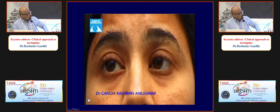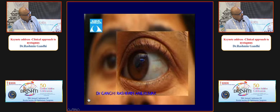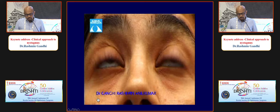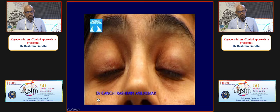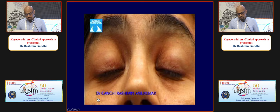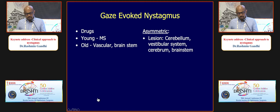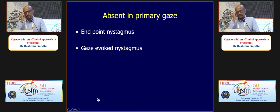Upbeat nystagmus can be because of a lesion in the cerebellum or lower brainstem, while downbeat nystagmus can be caused by drugs like lithium or lesion in the midline cerebellum. Pendular nystagmus — where the eyes swing like a pendulum with no fast phase — is generally due to an ocular cause such as foveal hypoplasia, albinism, bilateral macular scar, or cone dystrophy. However, look at the palate carefully: oculopalatal tremor presents with pendular nystagmus synchronized with palatal tremor, indicating neurological disease.